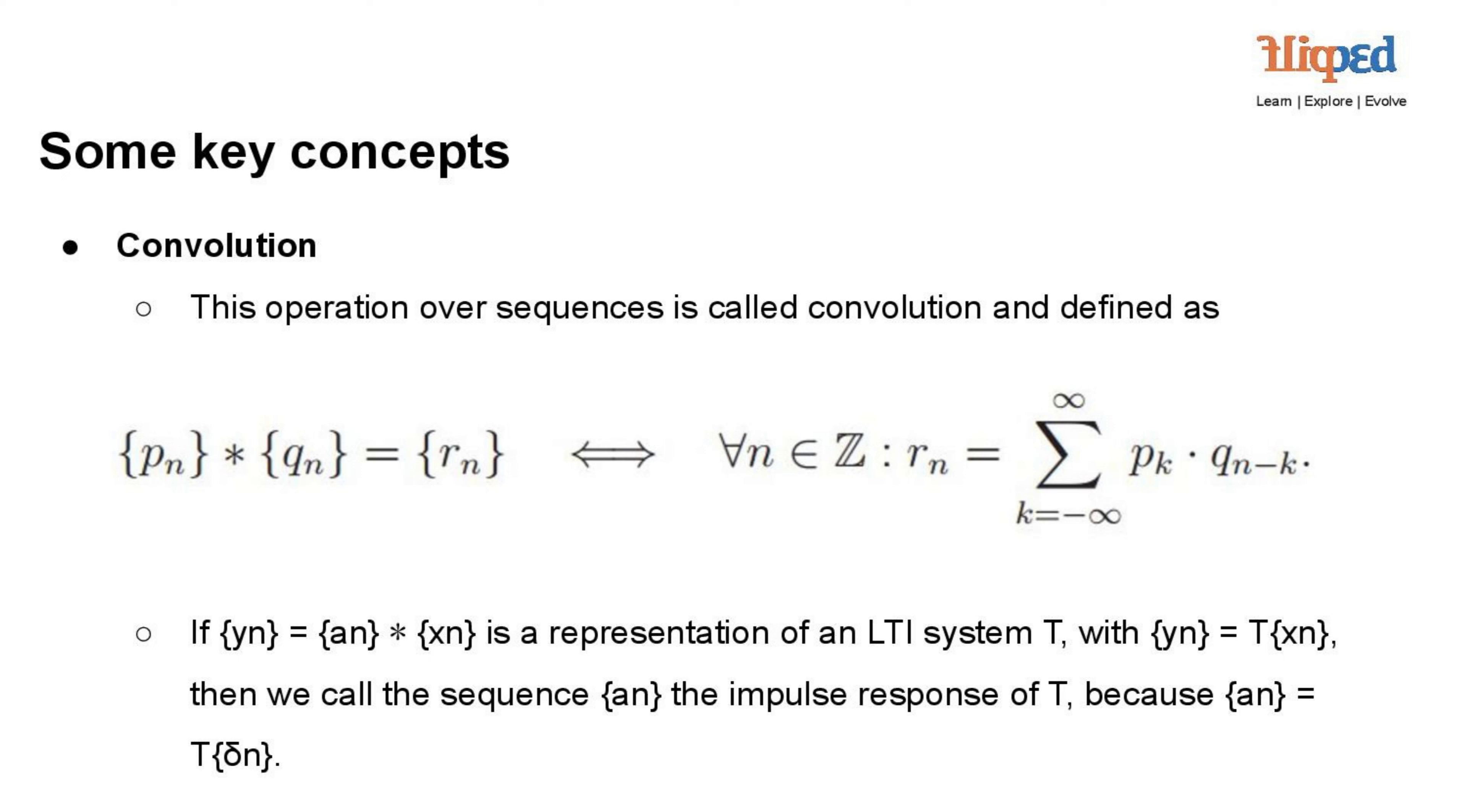Applications: convolution and impulse response are crucial for analyzing and modeling various systems, including filters, communication channels, and image processing operations. They help us understand how systems alter and process signals, forming the basis for advanced signal processing techniques. Mastering convolution and its connection to impulse response enhances your ability to design and manipulate signals, making them invaluable skills in the field of signal processing.